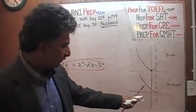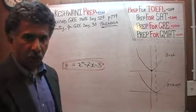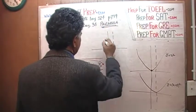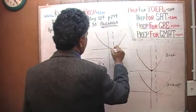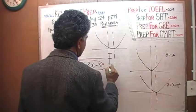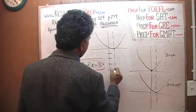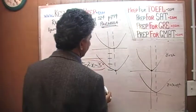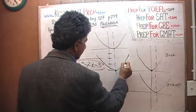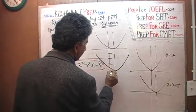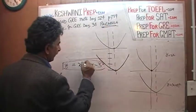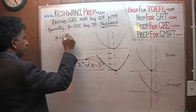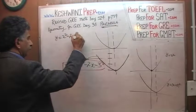Next, what we did is we picked up this new parabola and pulled it down four units. It was sitting here, and we shifted it down — one, two, three, four units — right here. This final parabola, this is the equation: y equals to x squared minus 2x minus 3.